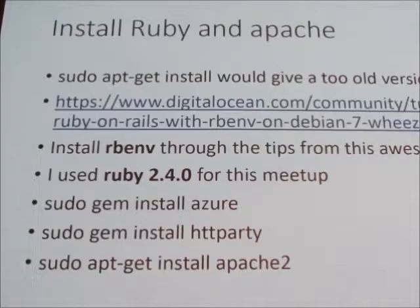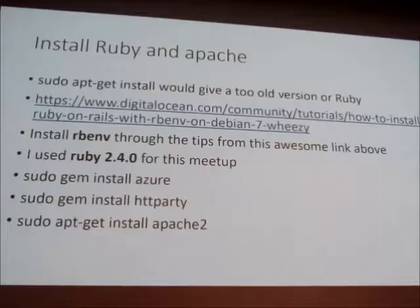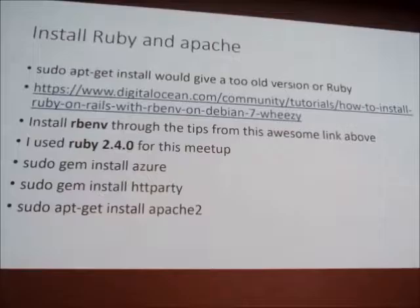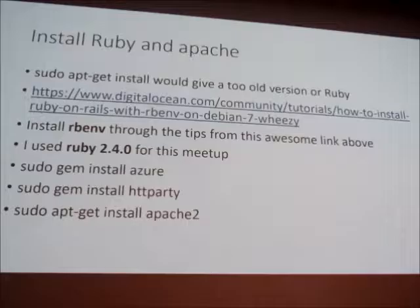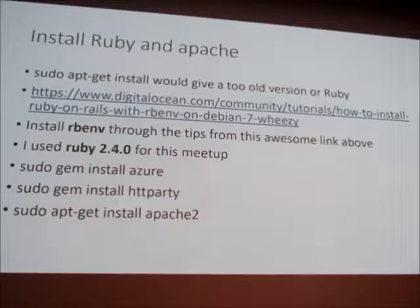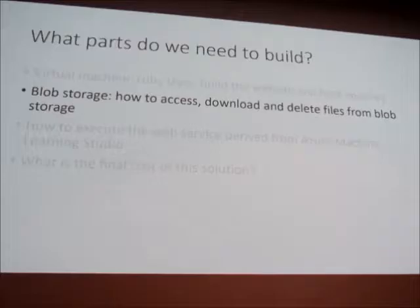For installing Ruby and Apache, using apt-get install is not the best strategy because you get an older version, so instead you can use RVM. I use this for setting up Ruby 2.4.0. You'll also need the Azure gem and HTTParty to perform the rest of the work, and then install Apache 2.0. This gets us going with the virtual machine in the cloud.